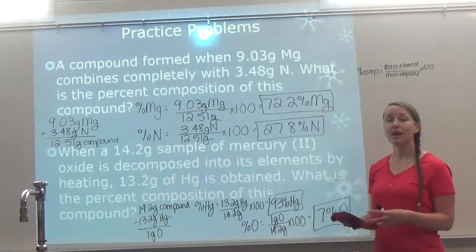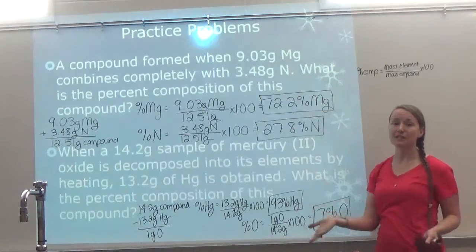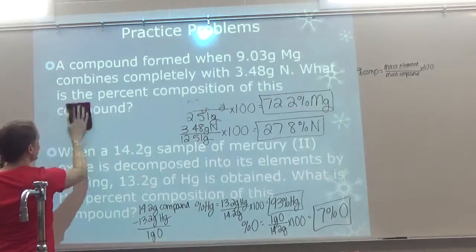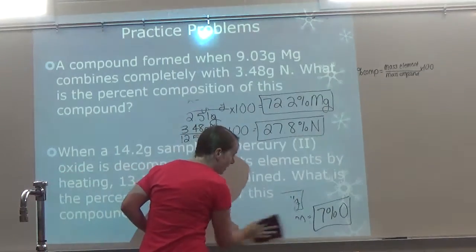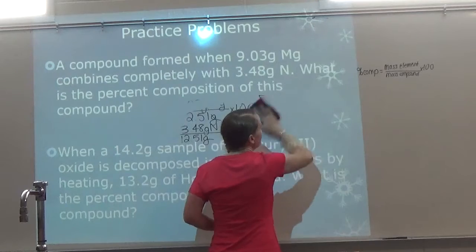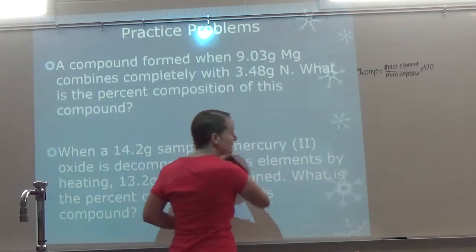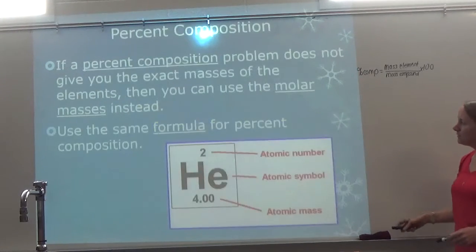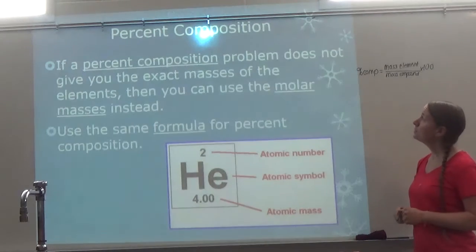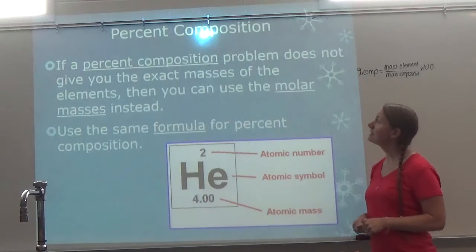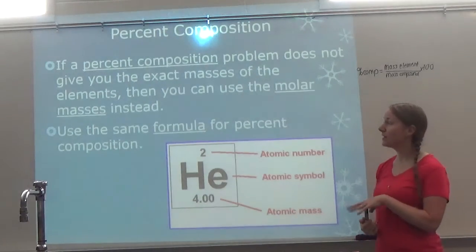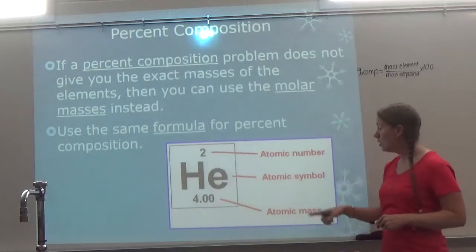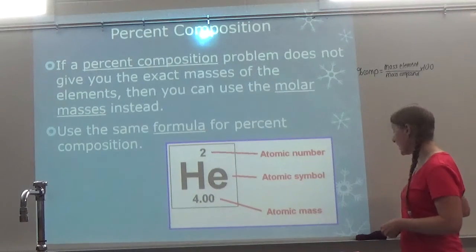This is one way to do percent composition, where they give you masses to work with. Sometimes they won't give you any masses. The problem is the same — we use the same formula and follow the same steps — it's just that we have to get the masses ourselves from the periodic table. If a percent composition problem does not give you the exact masses of the elements, you can use the molar masses instead. We use the same formula — mass of element over mass of compound times 100 — just pulling atomic mass from the periodic table instead.